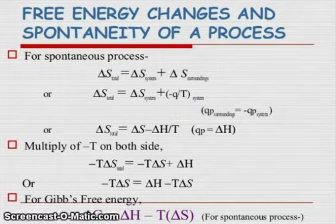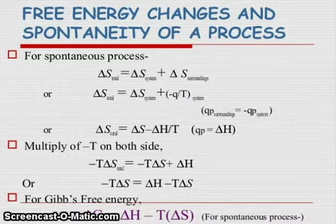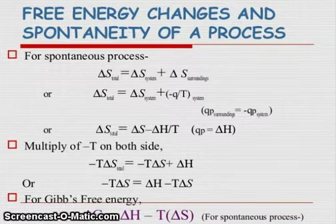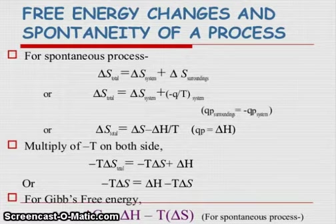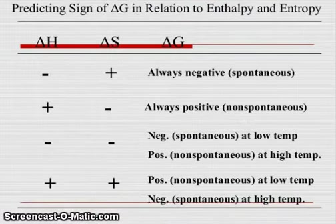Multiply minus T on both sides. Minus TΔS total equals minus TΔS plus ΔH. Or minus TΔS equals ΔH minus TΔS for spontaneous process.